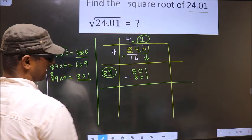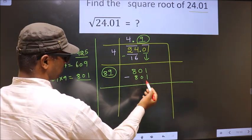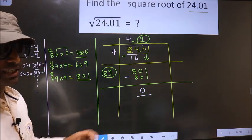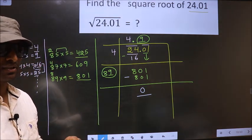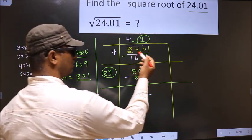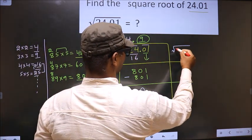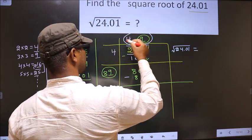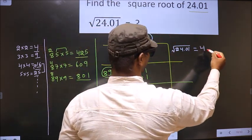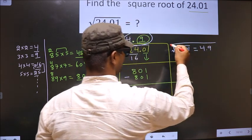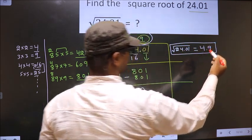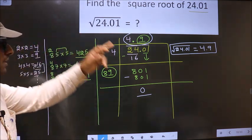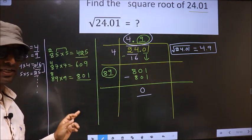So now you subtract. 801 minus 801 is 0. We got the remainder to be 0. Therefore, square root of 24.01 is this decimal, that is 4.9. So this is our answer.